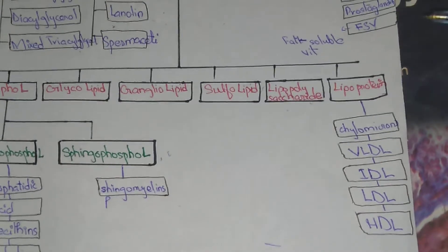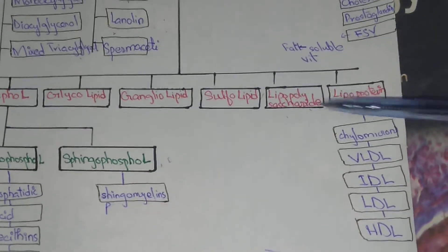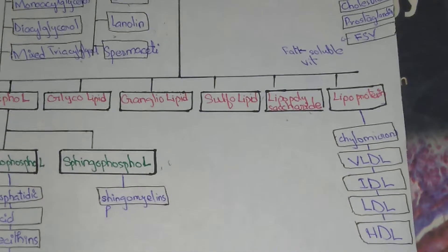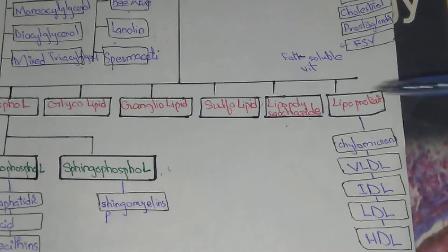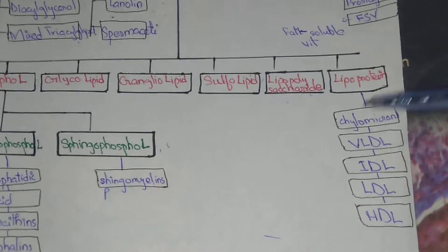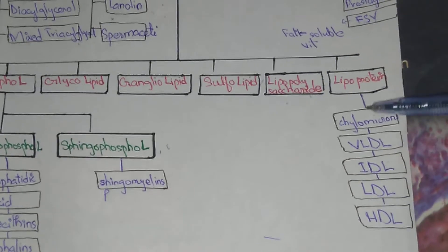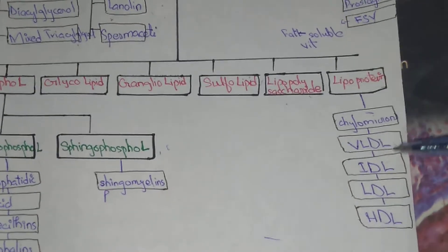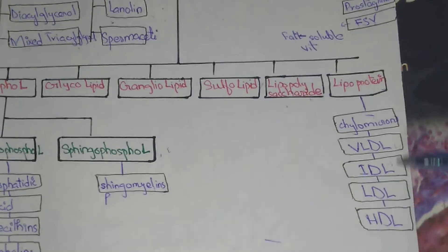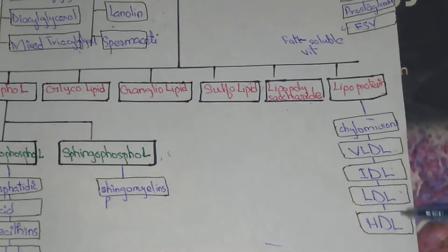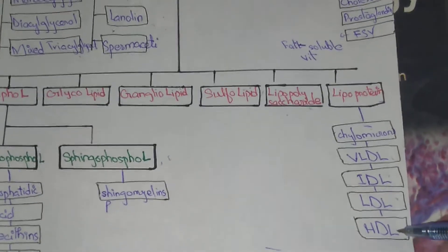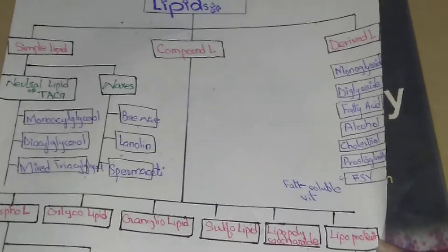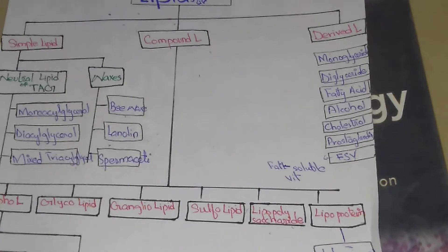Lipoprotein is a very important topic according to classification and according to your health — we will discuss lipoprotein in the next video. Lipoproteins further divide into five types: chylomicrons, very low density lipoprotein (VLDL), intermediate density lipoprotein (IDL), low density lipoprotein (LDL), and high density lipoprotein (HDL).